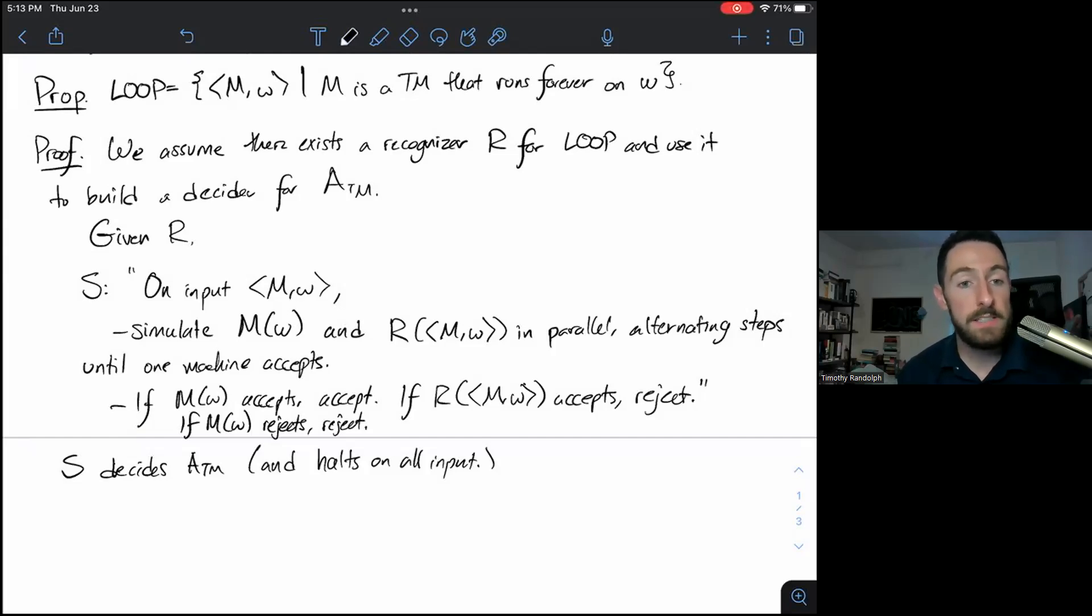So what that does now on the assumption that LOOP is recognizable, we've built a paradoxical Turing machine, something that decides ATM. ATM is not decidable. So this is a contradiction. So I hope those two examples of reductions used to show that languages are undecidable and unrecognizable will help you as you prepare for the final. This is one of our last critical skills for the semester. So good luck with that. And I will see you in our last class on Tuesday.